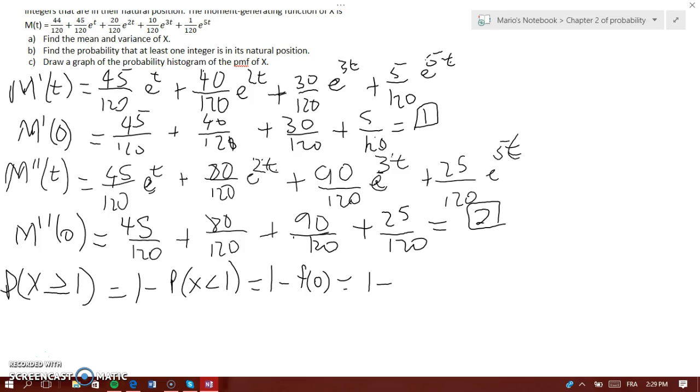So the only number here that has no e, or no exponent at all, which is e to the power of some x times t, is 44 over 120. So it will be 1 minus 44 over 120, and that would equal 19 over 30.